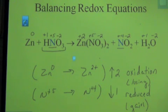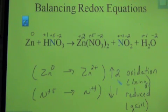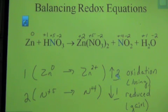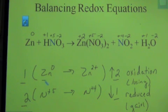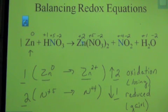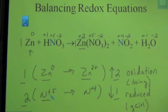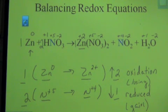We have one substance losing two electrons and the other gaining one — they don't balance. To balance the electron transfer, we put numbers to the left: 1 times 2 means for every two electrons lost, 2 times 1 means we gain two. We use these numbers as coefficients in the balanced equation: a coefficient of 1 for Zn (reactant) and 1 for Zn²⁺ (product); a coefficient of 2 for nitrogen with +5 on the left (HNO₃) and 2 for nitrogen with +4 (NO₂).